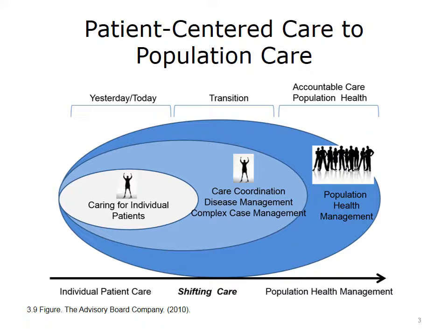And finally, in accountable care and population health, our health care system and primary care physicians in particular become incentivized to care for the entire population of patients — not just providing care for one individual or coordinating care for that individual, but moving to the coordination of care in achieving population health management objectives.